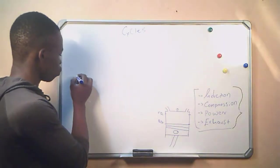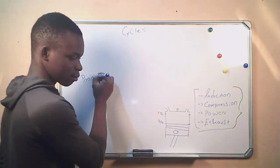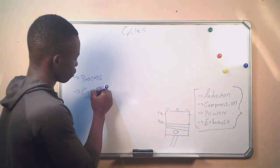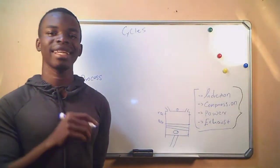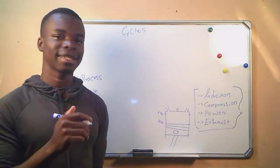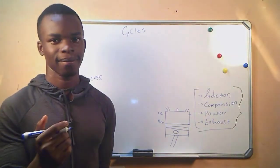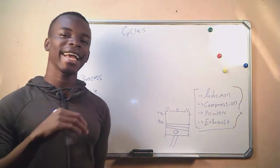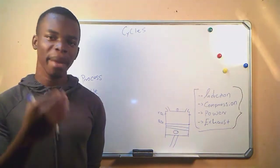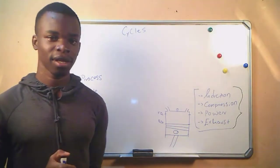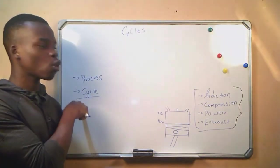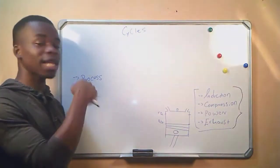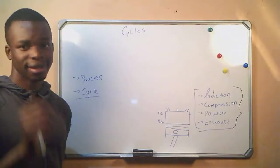Let's start with these two terms. First is process, and then the cycle. A process is an exercise that results in a change of substance. A cycle is a process that happens in terms of repeated sequencing. For it to qualify as a cycle, it must first be a process. Therefore, a process being done over and over is what we call a cycle.